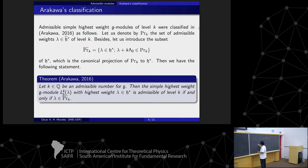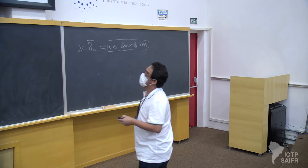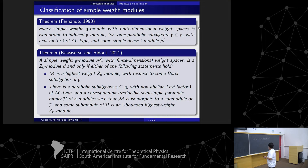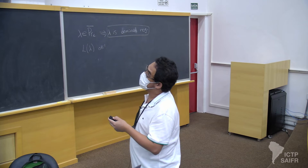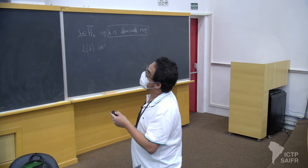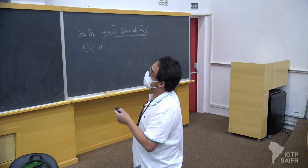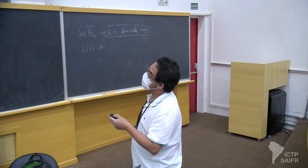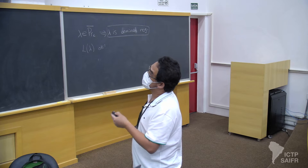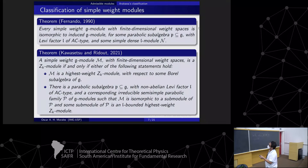This condition is very important for the first result — the classification of lambda is determined. Now, Fernando described simple weight modules with finite dimensional weight spaces. In this case, this module is induced from g for some parabolic algebra.